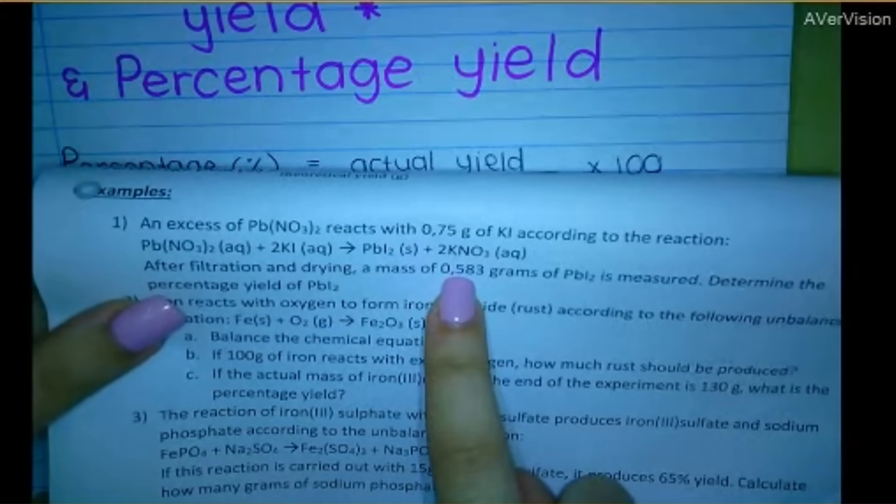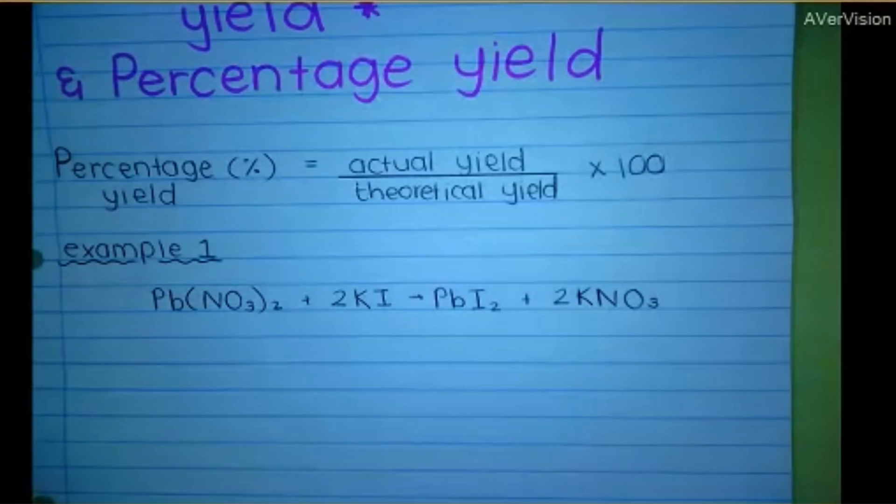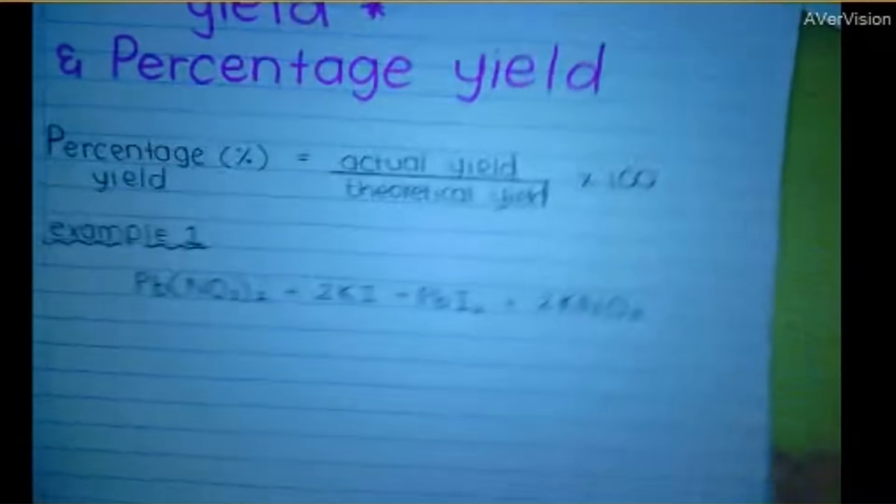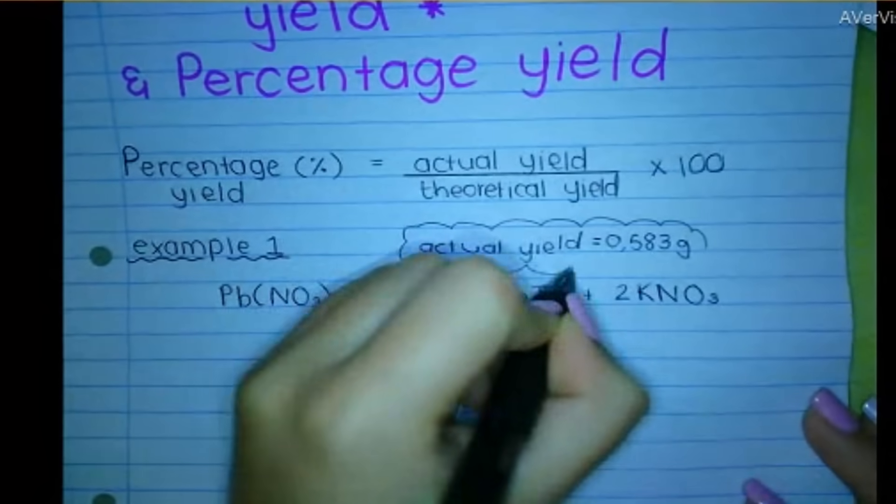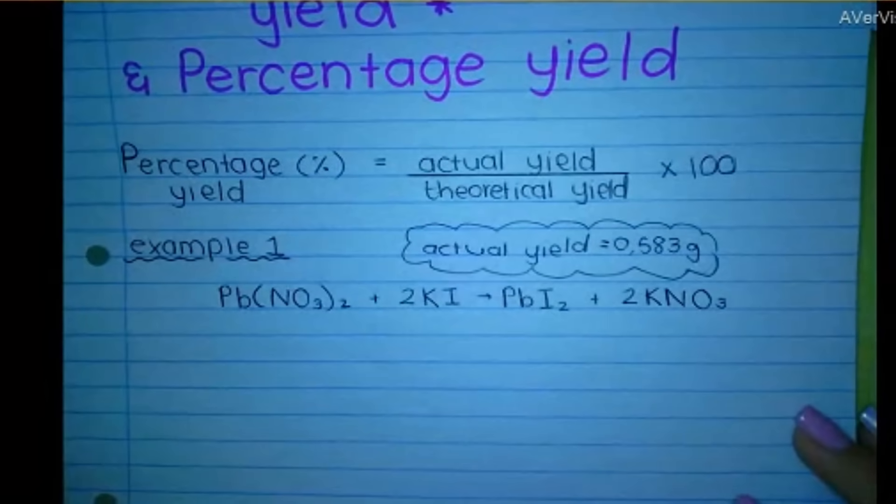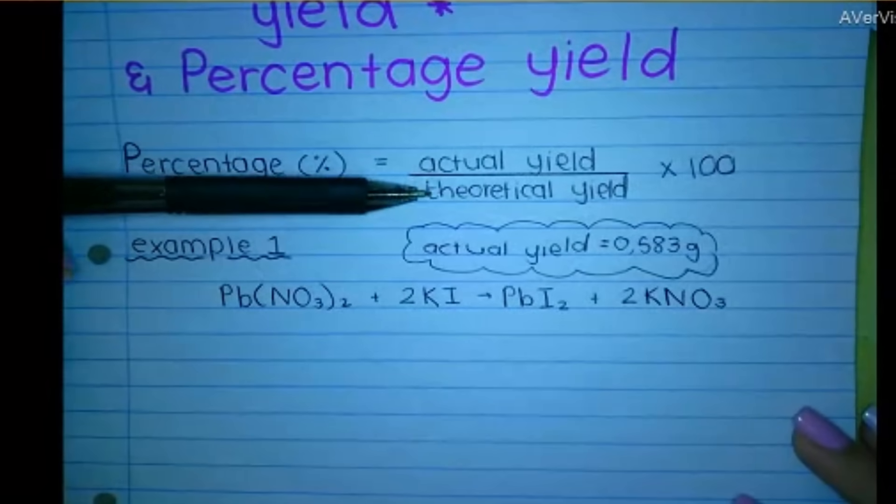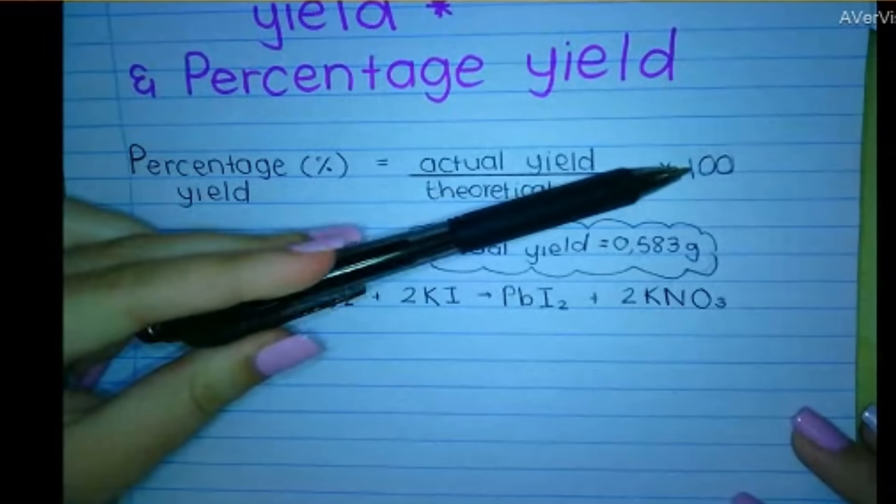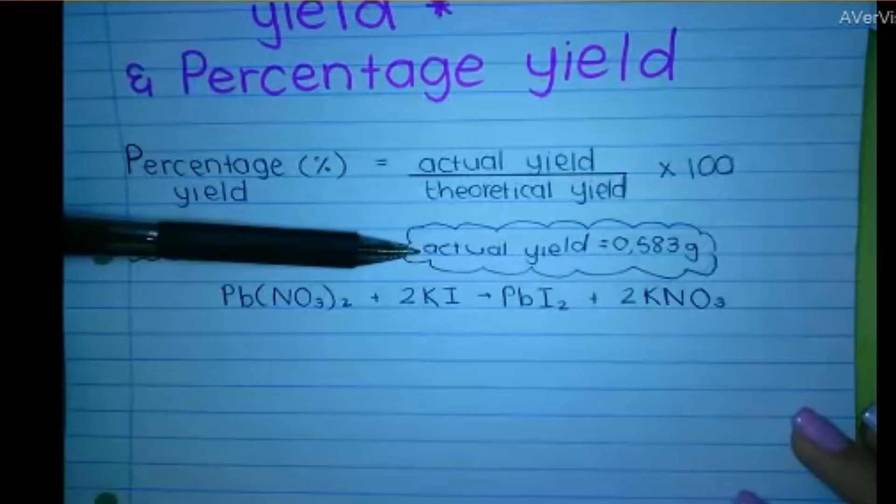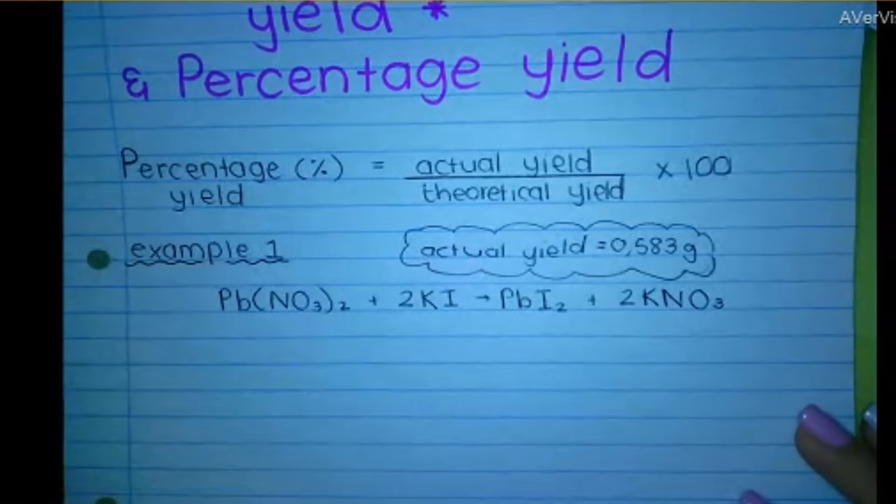And he was like, okay, I got 0.583. That's the actual yield. So I'm going to write that there so long. I'm almost there. If you look at the formula for percentage yield, the question asked, calculate percentage yield, I need actual yield divided by theoretical yield times 100 to give me a percentage, obviously. So I've got actual. But now how do I find theoretical yield?